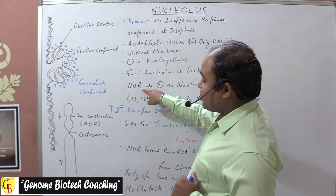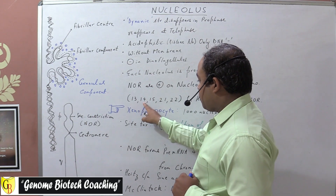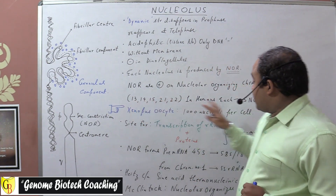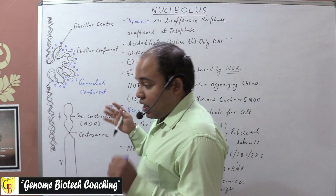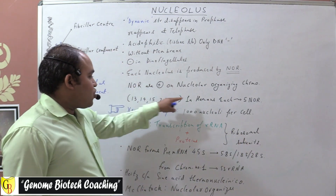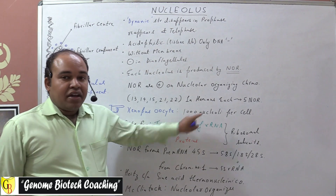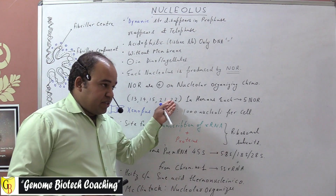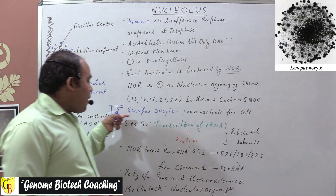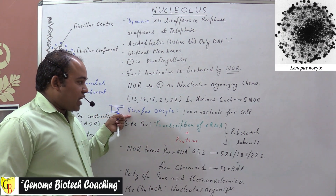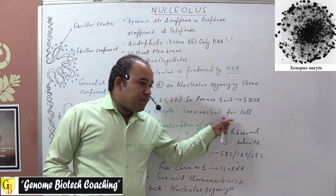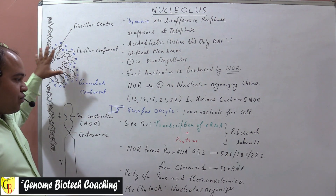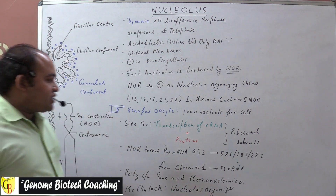In the case of Homo sapiens, the nuclear organizing regions are present on chromosomes number 13, 14, 15, 21, and 22, and each of these chromosomes contains five nuclear organizing regions. The number of nuclear organizing regions and the number of nucleoli per cell vary drastically in the living world — they may be as few as one per cell, and are present at a maximum in Xenopus oocytes where there are 1000 nucleoli per cell.